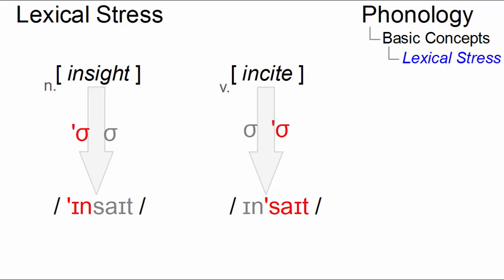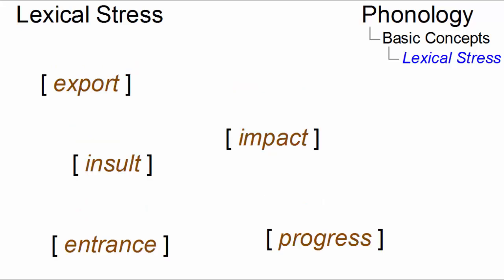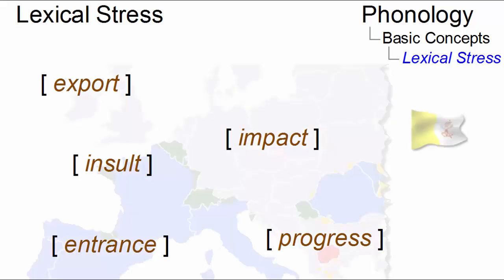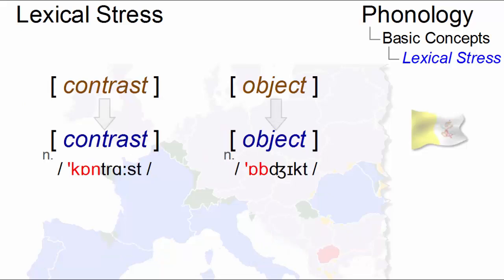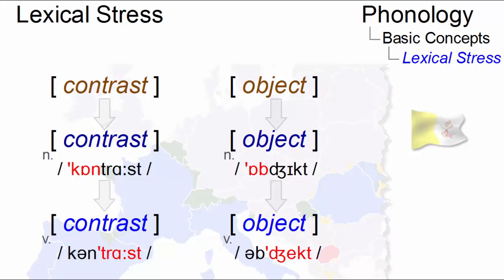In some cases, lexical stress leads to systematic differences. For example, in a group of primarily disyllabic words which have their origin in the Romance languages, the placement of stress helps to distinguish the word class. Words such as 'contrast' and 'object' are nouns since their first syllable is stressed, and they become verbs if stress falls on their second syllable, as in 'contrast' and 'object.'